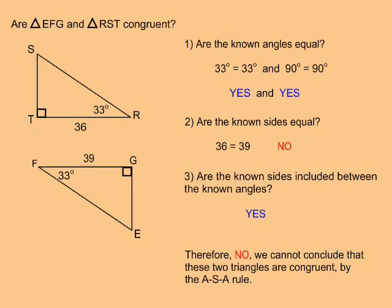In this example, are triangle EFG and triangle RST congruent? Question 1: are the known angles equal? Yes, both triangles have a 33 degree angle and both triangles have a 90 degree angle, so the known angles are equal. Question 2: are the known sides equal? No. One triangle has a 36 unit side and the other has a 39 unit side — the known sides are not equal. Question 3: are the known sides included between the known angles? Yes, in both cases the known side is included between the 90 degree and 33 degree angles. But because the known sides are not equal, we cannot conclude that these two triangles are congruent by the ASA rule.